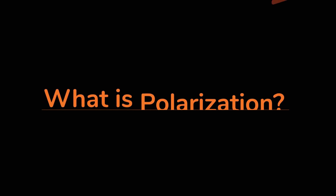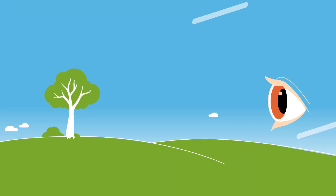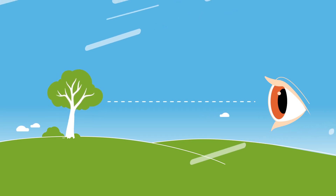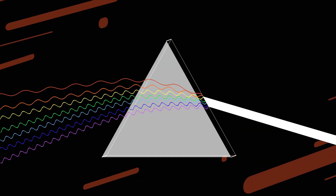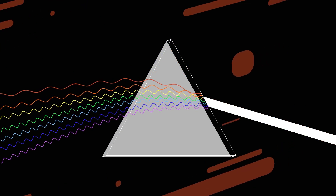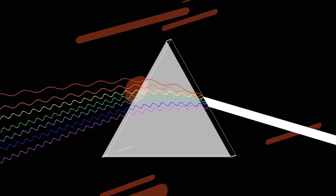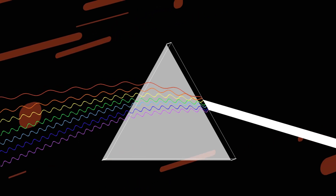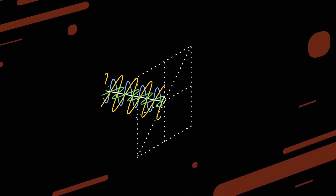What is polarization? Light bouncing off objects allows us to see them. Light is an oscillating electromagnetic wave, and we see different frequencies of that oscillation as different colors. The electric field component of a light wave can oscillate in any direction perpendicular to the direction of travel. Light from the sun oscillates in all directions — we say it is unpolarized.